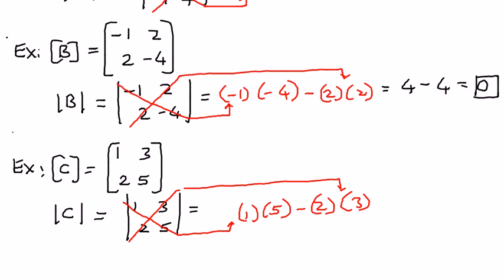When we simplify this: 1 times 5 is 5, and then minus 3 times 2 is 6. When we simplify, 5 minus 6 is equal to negative 1. Therefore the value of a determinant can be a negative value.